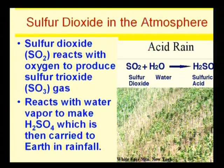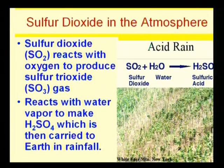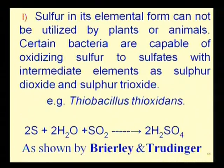Sulfur dioxide in the atmosphere combines with oxygen to produce sulfur trioxide, which further reacts with water vapor to form H2SO4. H2SO4 is carried to Earth with rain — this is known as acid rain, which is damaging to plants but is an important stage for the sulfur cycle.